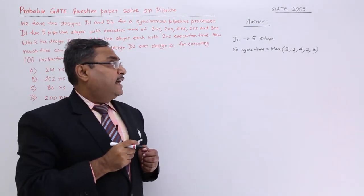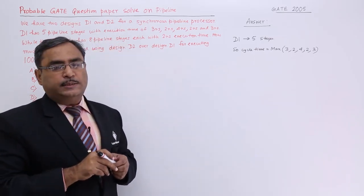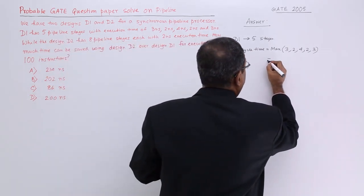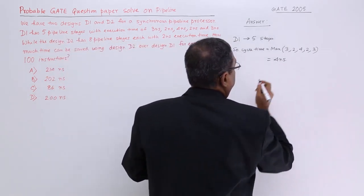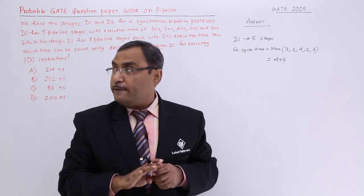To calculate the cycle time for the pipeline D1, I shall have to calculate the maximum of all phase durations and obviously, I am getting 4, that is 4 nanosecond. The cycle time for D1 is 4 nanosecond.